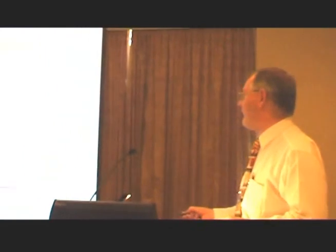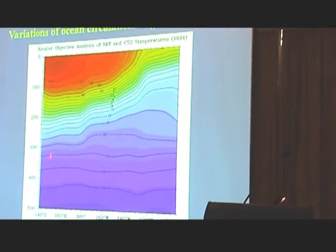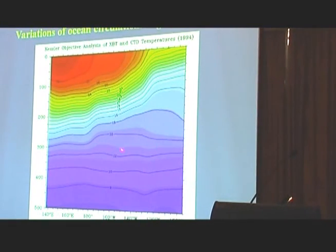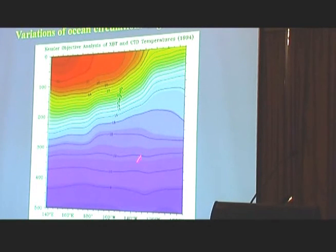The issue though is that we've only started measuring the subsurface ocean currents about five years ago. How is it that computer models can project 100 years in advance without knowing these sorts of interactions?